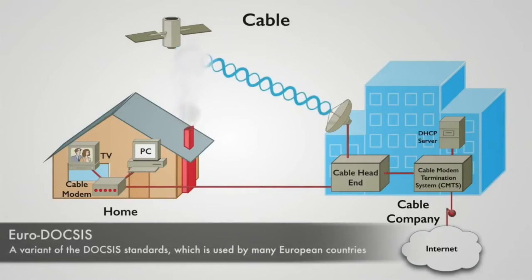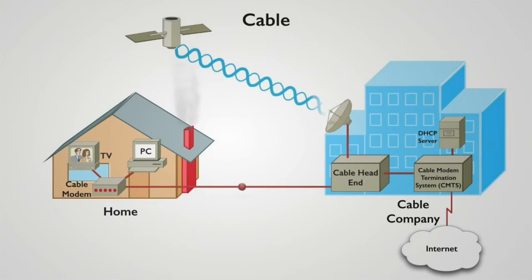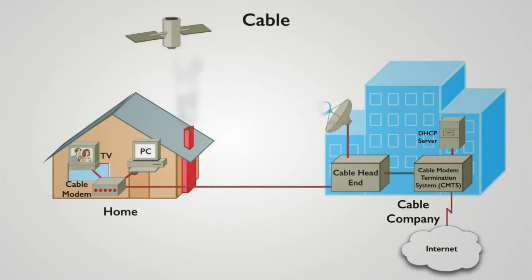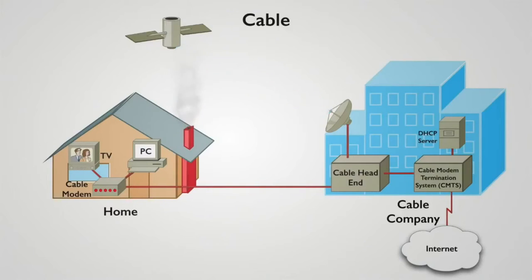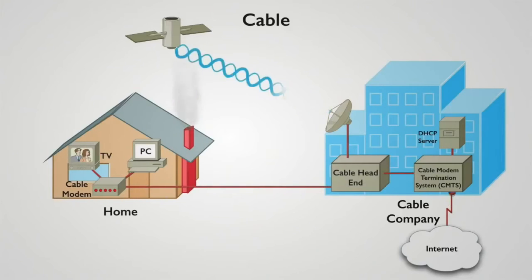To summarize cable modem characteristics: this technology is widely available because so many homes already have cable television. Even though bandwidth is shared with neighbors, cable modems generally offer more bandwidth than DSL connections — especially the common ADSL connections found in homes. Different frequency ranges are used for sending and receiving data, and those frequency ranges are defined in the DOCSIS standard.